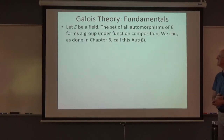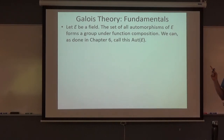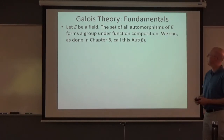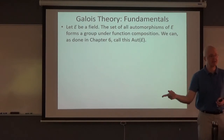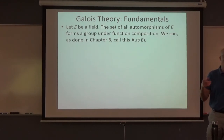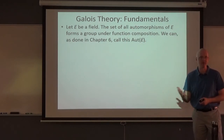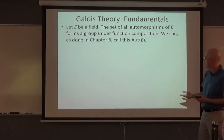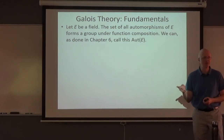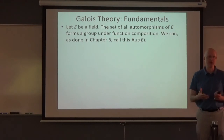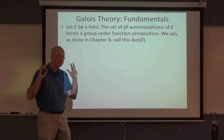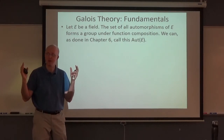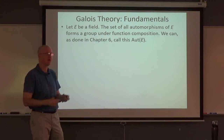Galois theory fundamentals. Let E be a field. I'm saying something a little differently than the book does here. You can consider the set of all automorphisms of E — these are ring automorphisms, or field automorphisms, because we are talking about fields. They are not just operation preserving; they are doubly operation preserving. Automorphisms mean going from E to itself — auto means self. They are isomorphisms: one-to-one and onto. This is going to be a group under function composition — just one binary operation as a group.